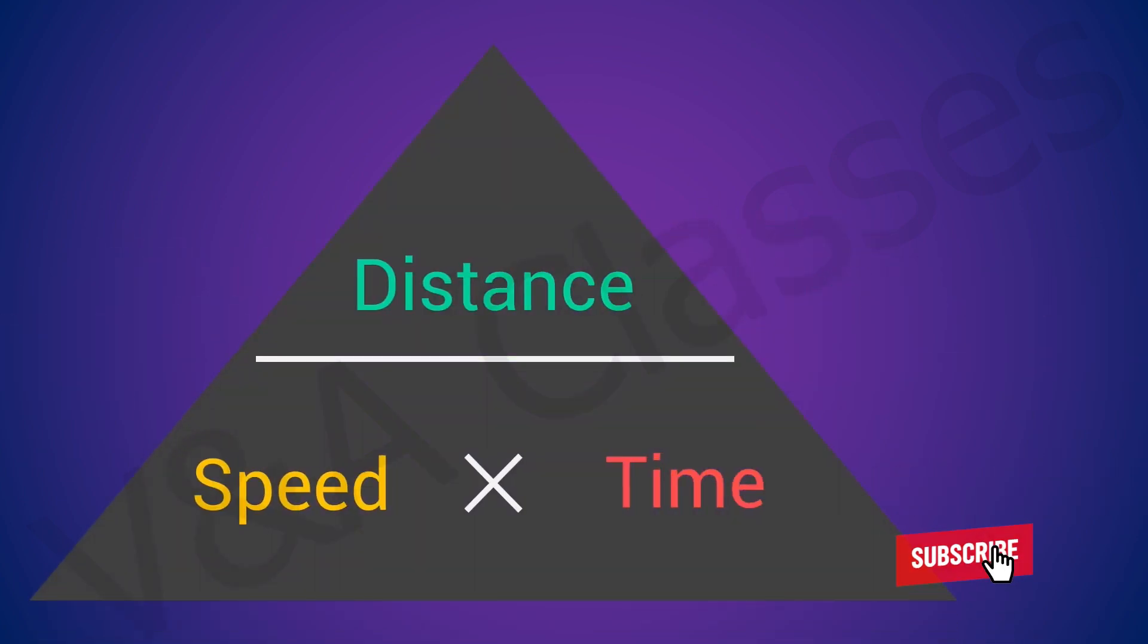Now let's see a magical triangle with the help of which we can very easily find the formula of all the three terms: speed, distance, and time.